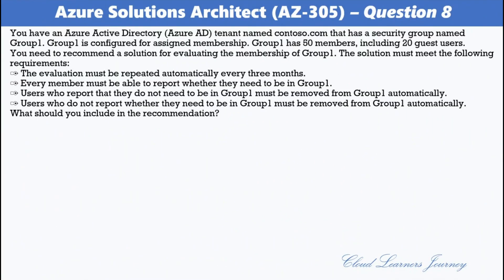Question 8. You have an Azure Active Directory tenant named Contestor.com with a security group named Group1. Group1 is configured for assigned membership and has 50 members, including 20 guest users. You need to recommend a solution for evaluating the membership of Group1. The solution must: repeat the evaluation automatically every 3 months; allow every member to report whether they need to be in Group1; automatically remove members who report they do not need to be in Group1; and automatically remove members who do not respond.